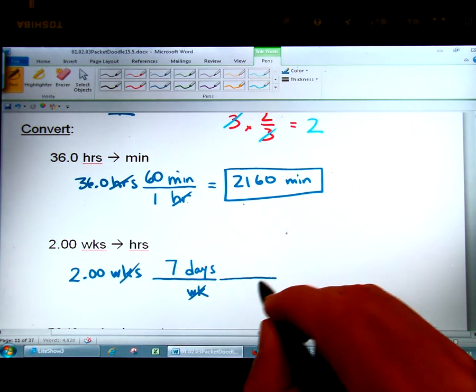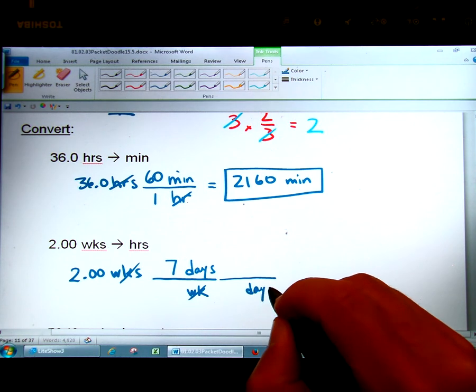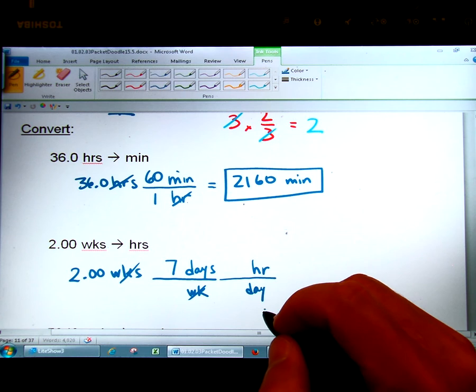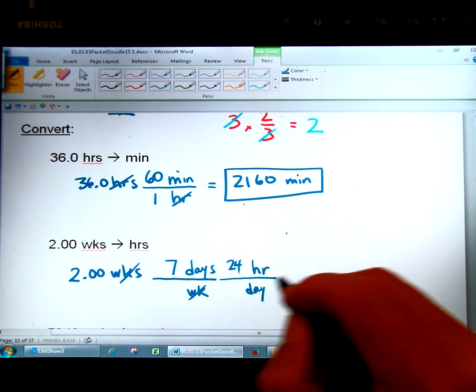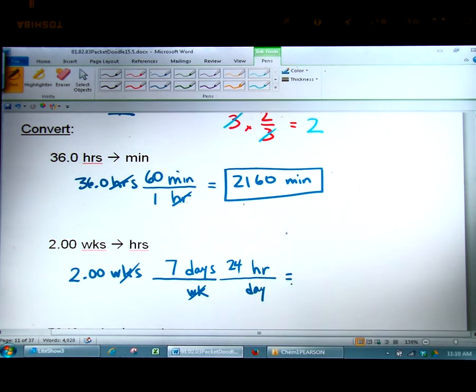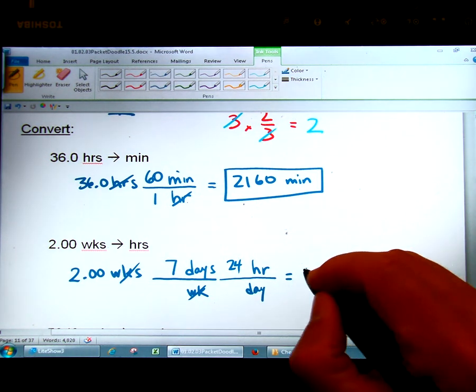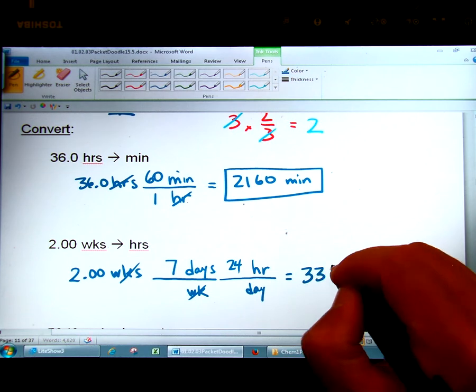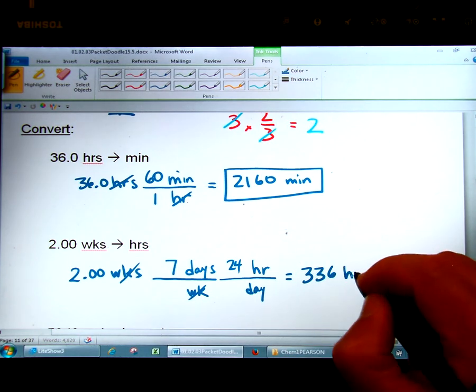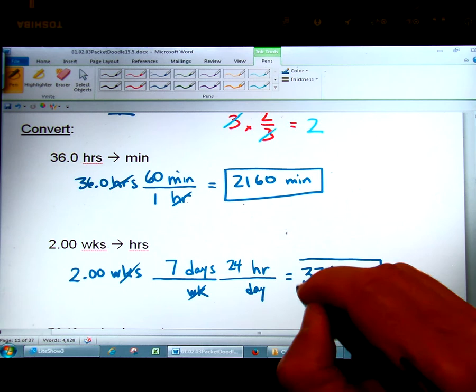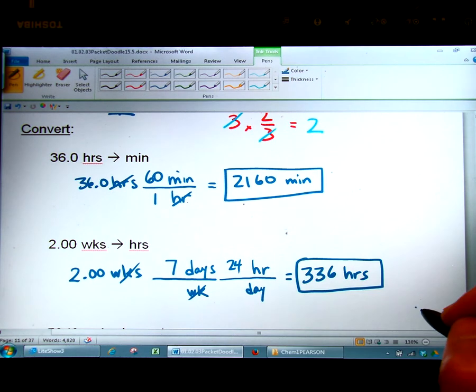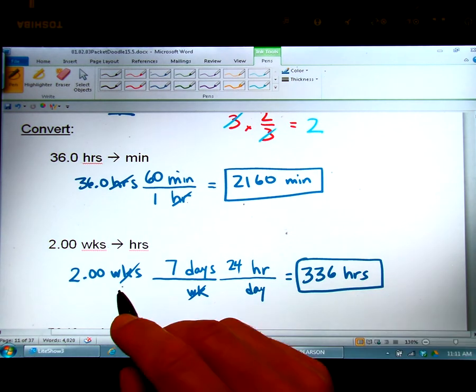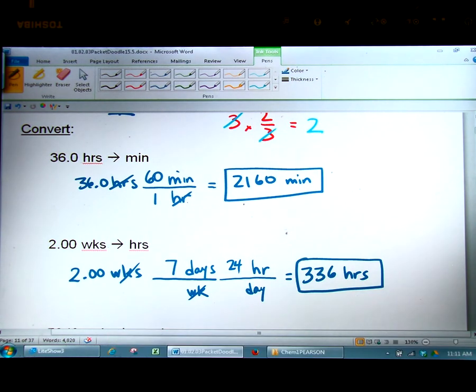But we really want to go to hours. So I'm going to make another conversion. Get rid of day. Go to hours. And ask myself what's the relationship. And that comes out to be 24 hours in one day. Now all you have to do is take 2 times 7 times 24. And you're going to find out that that comes out to be 336. So there are 336 hours in two weeks. That's what we were finding out. How many hours are in two weeks. And we did that by the use of our conversion factors.